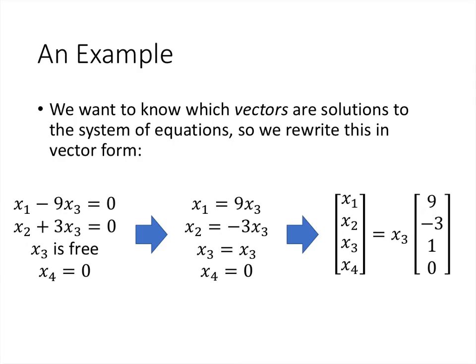Now we're going to do something a little bit different than we've done in the past. Because what we want to know are which vectors are solutions to the system of linear equations, we want to write our solution in vector form. So here are the equations that we have, and what we want to do is solve each of those equations for the basic variables: x₁, x₂, and x₄ are our basic variables, those corresponding to the columns where we had pivots. So x₁ - 9x₃ = 0, I'll solve that for x₁ and write it as x₁ = 9x₃. Similarly, I'll write x₂ = -3x₃. For a free variable, let's just write x₃ = x₃, and then x₄ = 0.